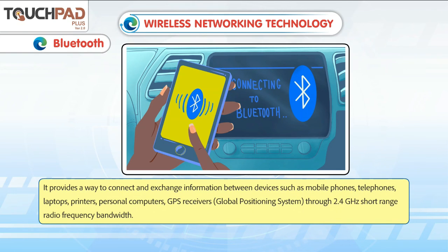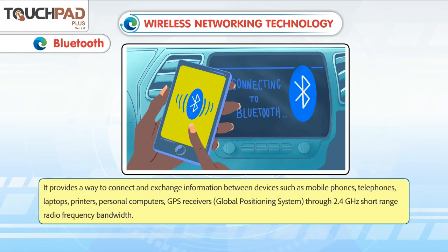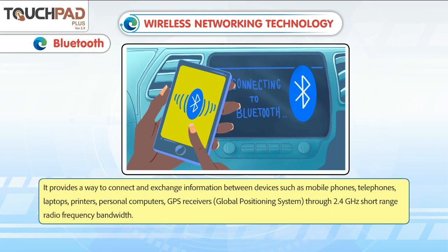Bluetooth provides a way to connect and exchange information between devices such as mobile phones, telephones, laptops, printers, personal computers, and GPS receivers — i.e., global positioning system — through 2.4 GHz short range radio frequency bandwidth.